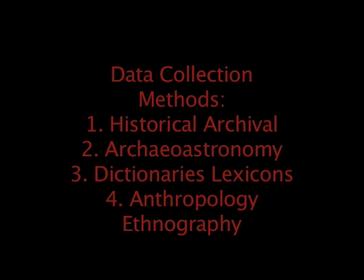The sources for archival historical methods are colonial archives, Islamic libraries, travel writings, and ethnographies — pretty much anything you can find in print. The method is to go to these archives and other printed materials and search for information about astronomy and the sky.